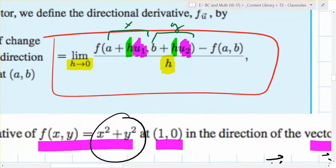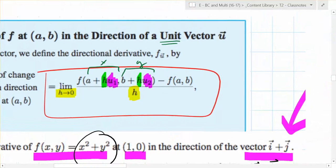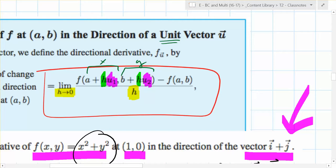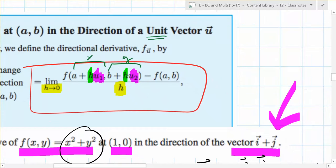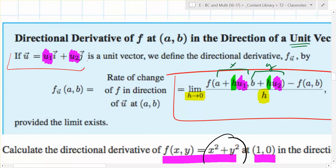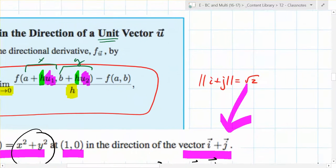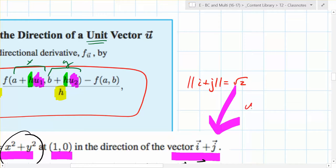So let's do one of them using this definition right here. So find the directional derivative of that function at that point in that direction. What's the direction? i plus j. Sema, is that a unit vector? No. What's the magnitude of i plus j? Square root of 2. So the first thing we do is we need to turn the direction into a unit vector. So we don't want to change the direction, we want to turn it into a unit vector. What is our unit vector in that direction going to be?